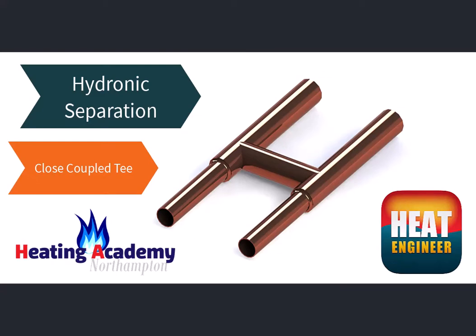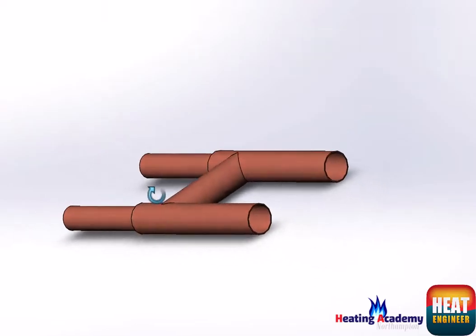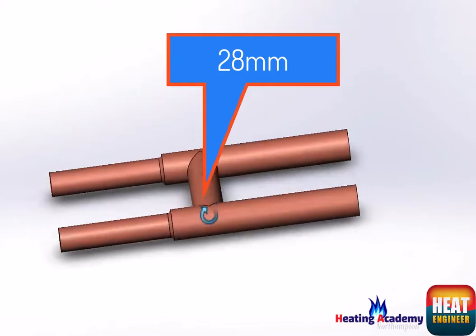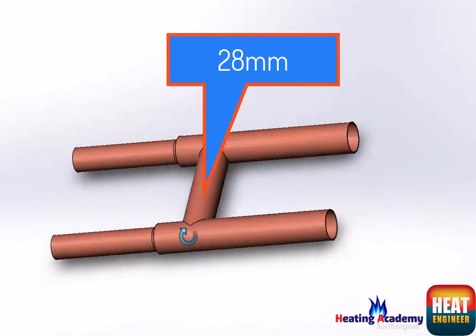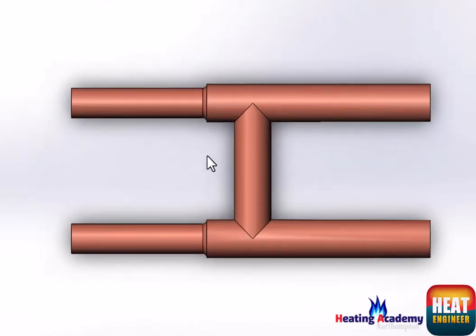Hello and welcome to our simulation video for close coupled T's. We've used 22mm and 28mm copper pipe for this video, and it's going to show you how the flow moves around this particular setup.